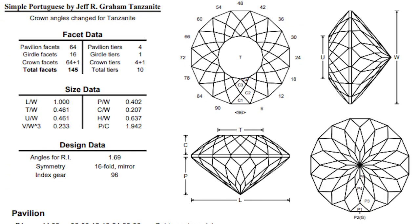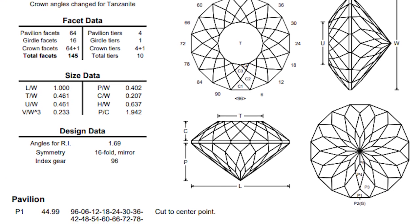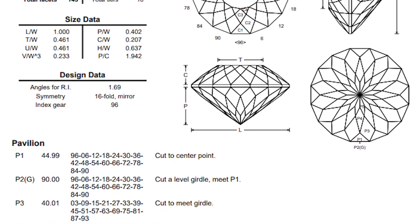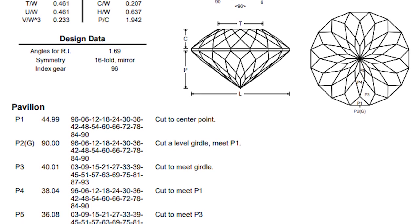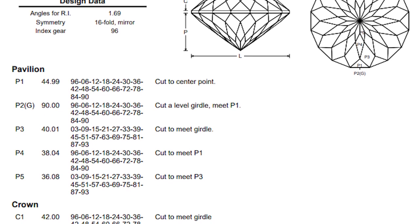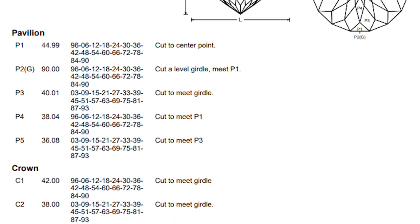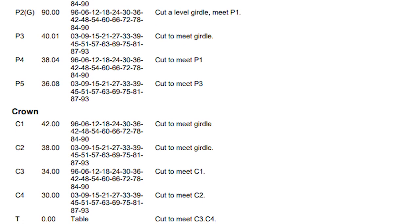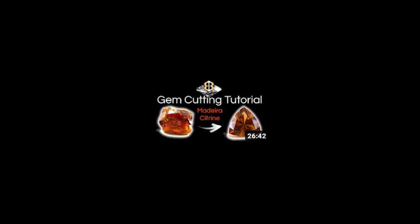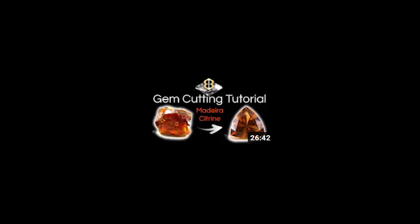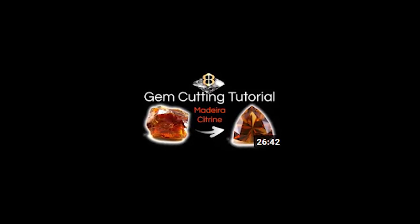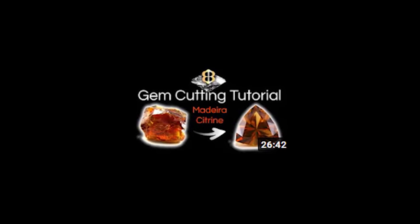I want to find the best Portuguese gem design for this Tanzanite. I used GCS, Gem Cut Studio, and looked through the various Portuguese gem cutting diagrams that are available on the internet. It looked to me like Jeff Graham's simple Portuguese design is the best Portuguese design that I have for Tanzanite. There are about 2,000 gem cutting designs of the late Jeff Graham that are in the public domain.